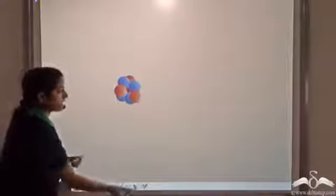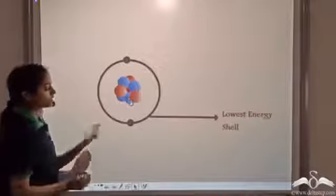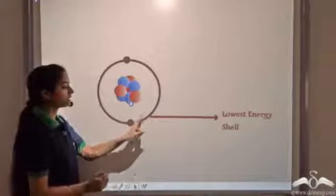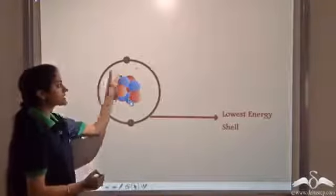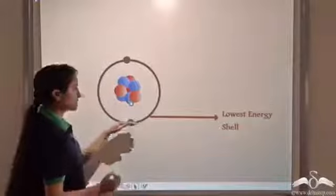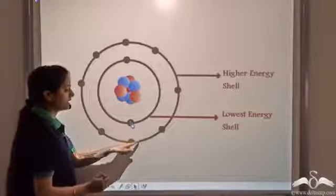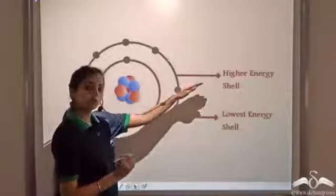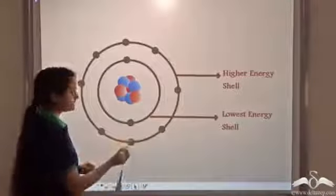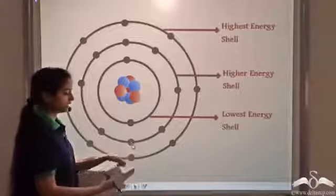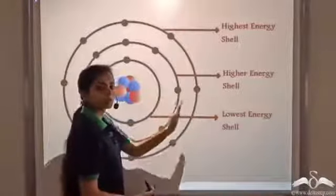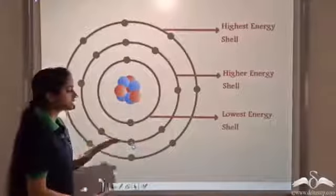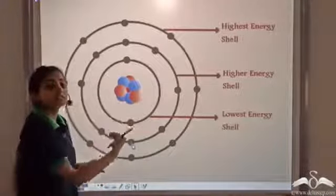Here we have a nucleus. As we add electrons, they first occupy the first shell, the K shell. According to Bohr, the energy of the shells is related to their size. The first shell is smallest in size, so it has the lowest energy. When this shell gets filled, electrons then occupy the second shell, the L shell, which has more energy than the first. When that fills, electrons go to the next shell, the M shell, which has the highest energy of the three. As the size of the shells increases, the energy also increases. So electrons are occupied in a stepwise manner.